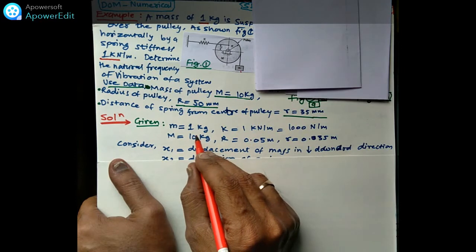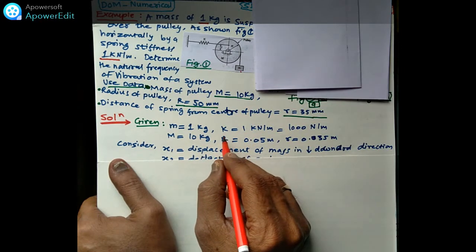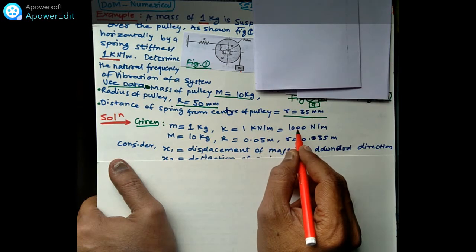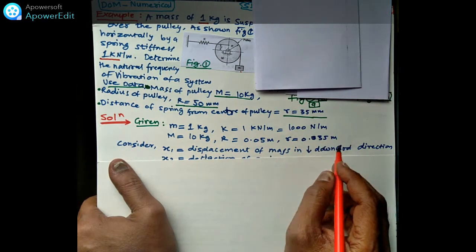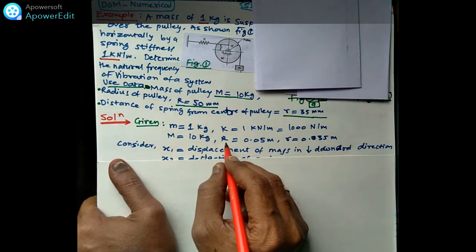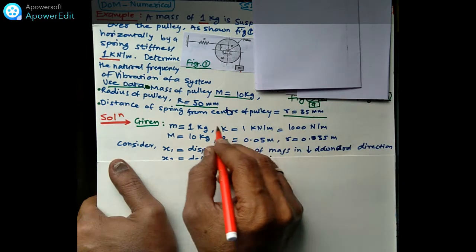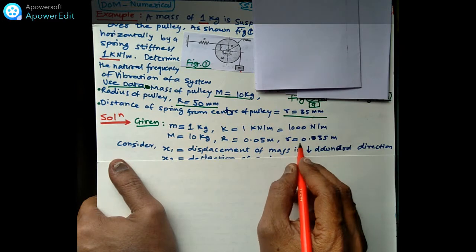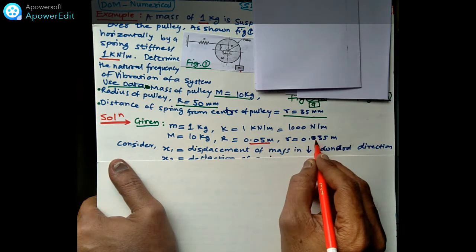The given values are K, small m, capital M, and R. K is in kilonewtons per meter, which is converted to newtons per meter as 1000. Capital R is given in millimeters and is converted directly to meters.